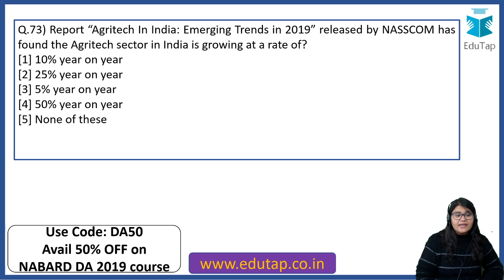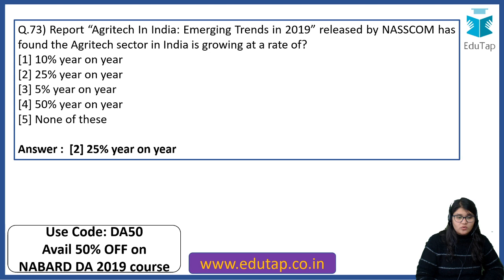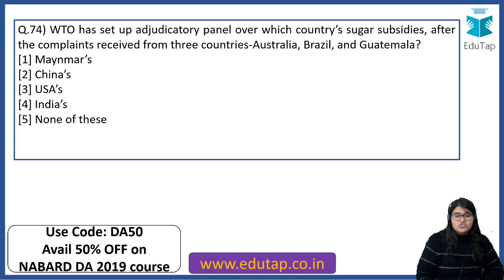Report on AgriTech in India: Emerging Trends in 2019 released by NASSCOM found the AgriTech sector in India is growing at 25% year on year. WTO has set up an adjudicatory panel over which country's sugar subsidies after complaints received from Australia, Brazil and Guatemala? The answer is India's.